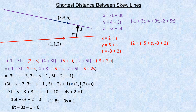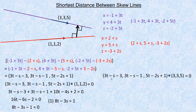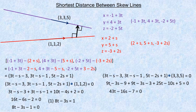Just as that vector is perpendicular to 1, 1, 2, it must also be perpendicular to direction vector 3, 3, 5. Taking the dot product with 3, 3, 5 and setting it equal to zero: 3 times (3t minus s minus 3) plus 3 times (3t minus s minus 1) plus 5 times (5t minus 2s plus 1) equals zero. Collecting like terms: 43t minus 16s minus 7 equals zero, so equation 2 is: 43t minus 16s equals 7.